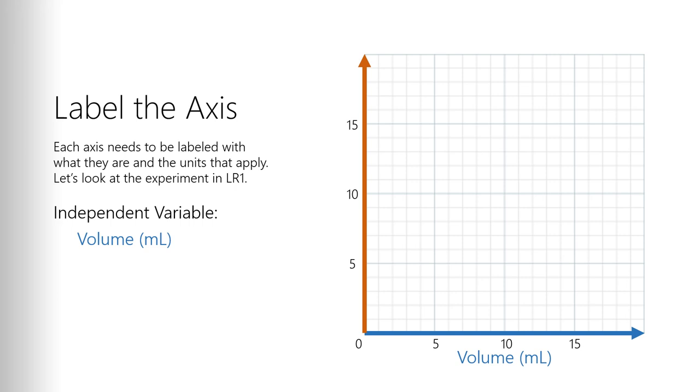And you always also want to put the units that you're talking about. So we'll label it volume, and we'll say it's in milliliters. That means our dependent variable, the one that is affected by what we did, right? So by adding more volume in, the mass got higher. So we added the volume in, that's independent. This mass is dependent on what we did in that independent variable. So our mass is our dependent variable, the y-axis. Label it mass, g for grams.